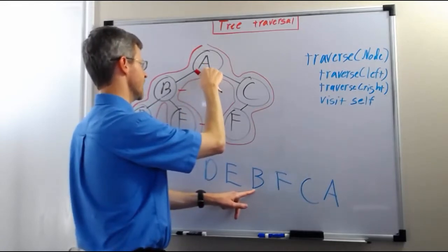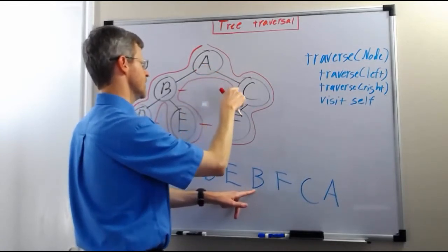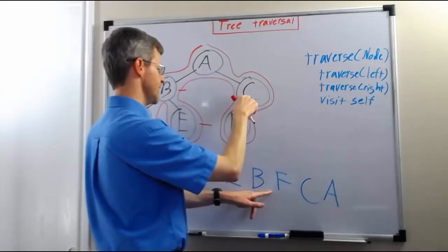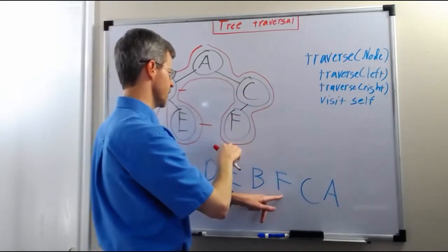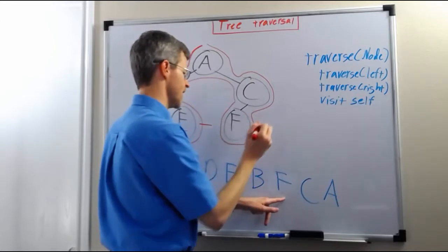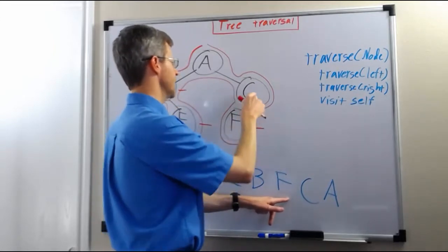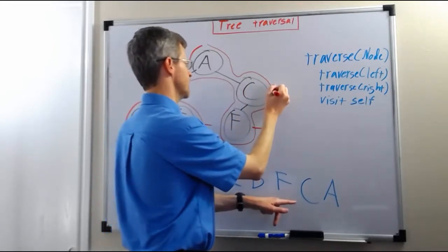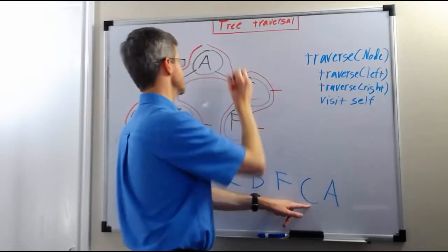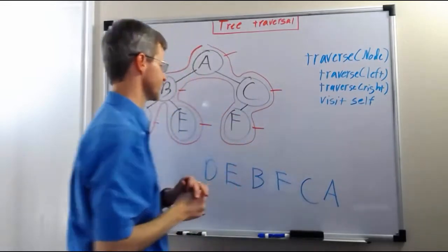We may come up to A, but we're only under it, not to the right of it. We come over to C, we go to the left of it, we come over to F, we go to the left of it, we go under it. Finally, we go to the right of F, and so we visit F. And then we come over here to the right of C, so we visit C. And then we come over here to the right of A, and we visit A.